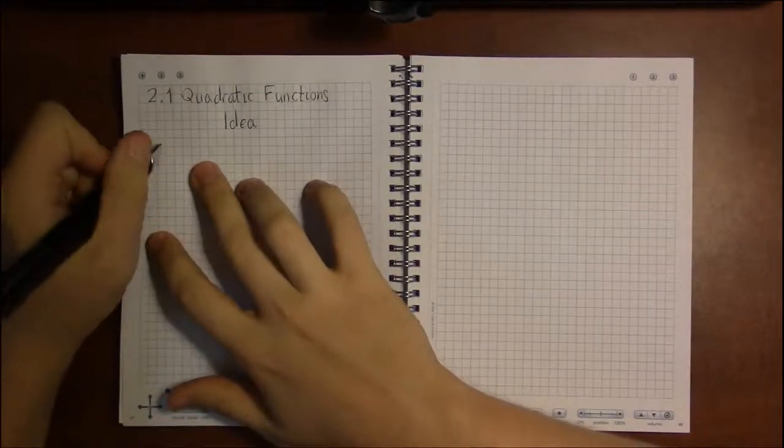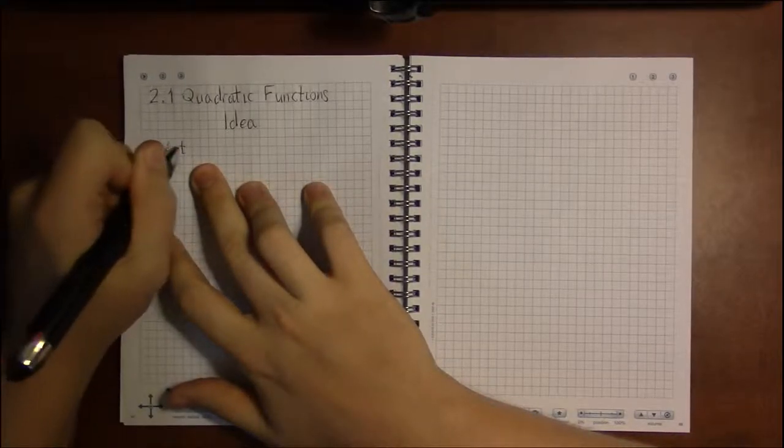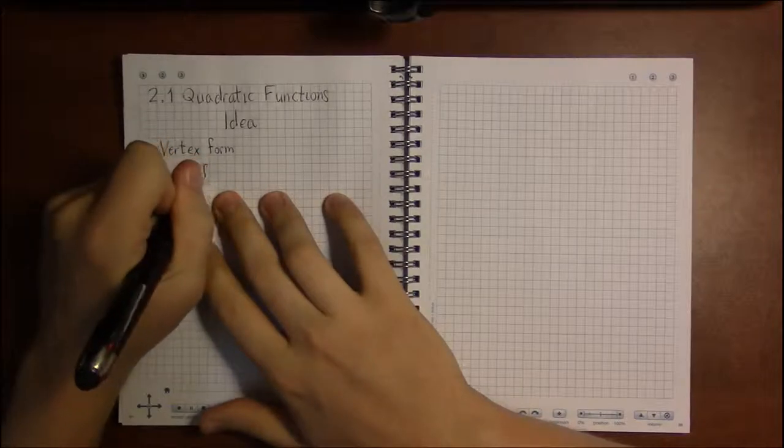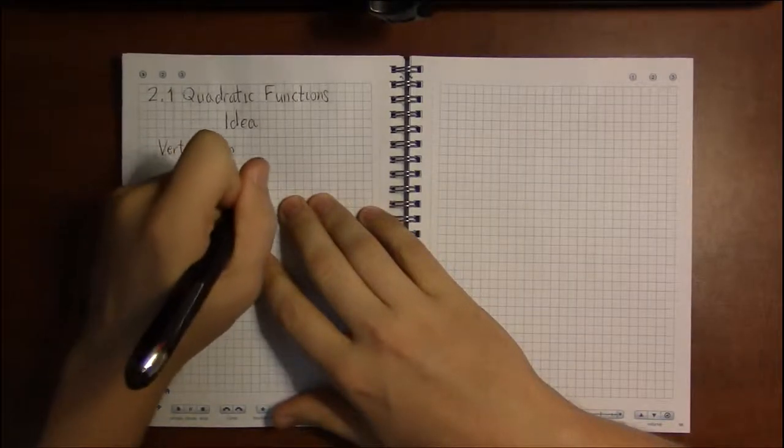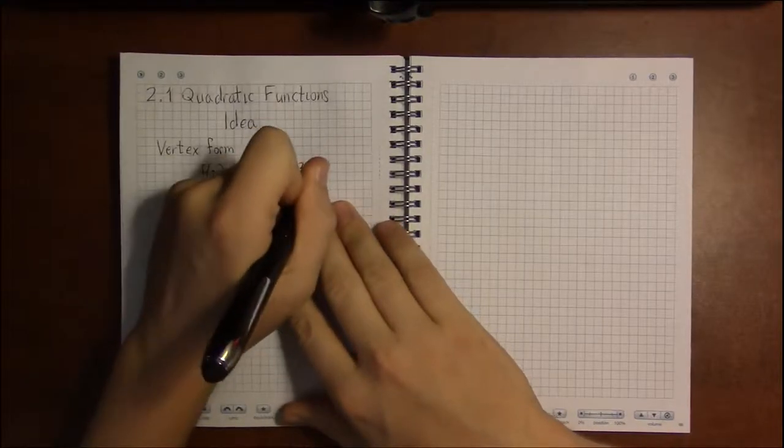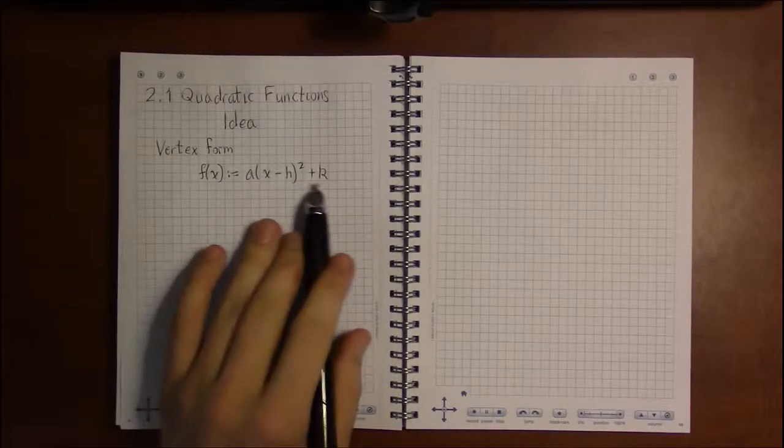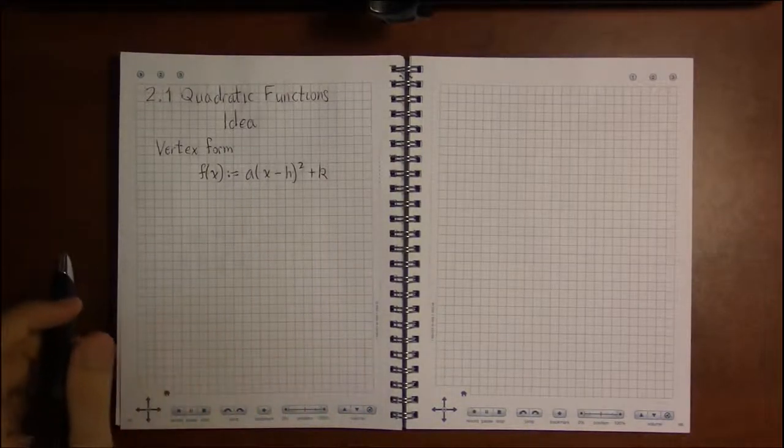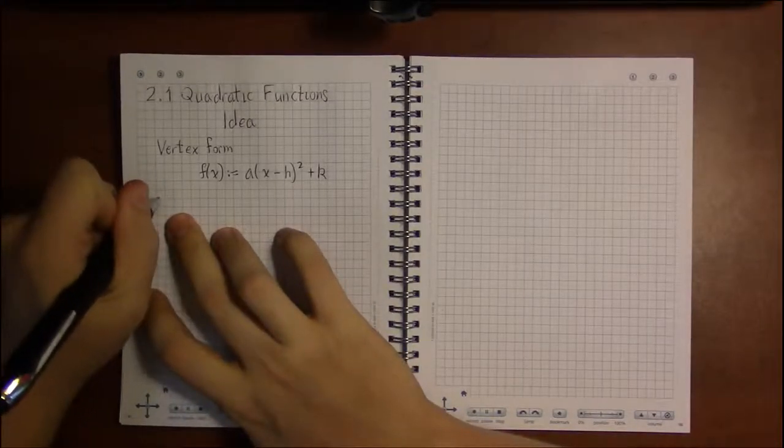Alright, so in the last video we introduced the standard form and the vertex form of a quadratic. In this video, we're going to learn how to use the vertex form to find the equation of a parabola given the vertex and one other point through which the quadratic passes.